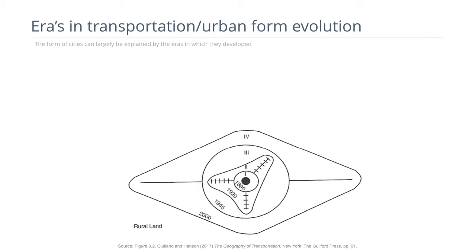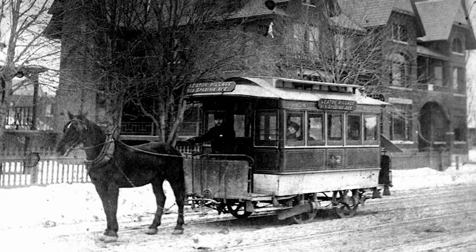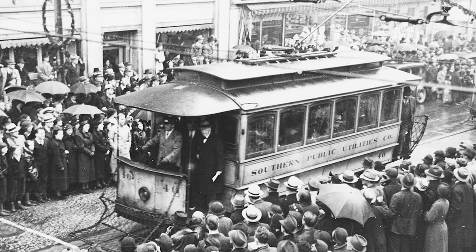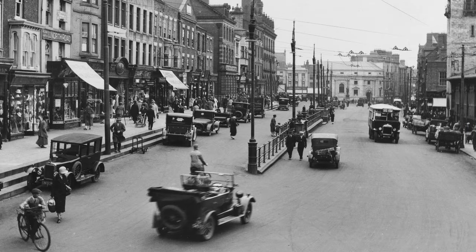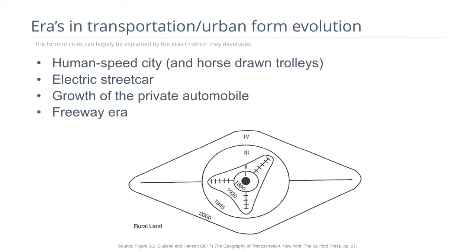Here we can see the four eras. The first — the small circle in the middle — is the human-speed city where people walked or used horse-drawn trolleys, and goods were moved with animals pulling carts. The city couldn't be very large because you simply couldn't travel far in a given time. The next stage is the electric streetcar city with spatial expansion along streetcar lines, then the growth of private automobiles filling in between streetcar lines, and finally the freeway era, which produced the most spatial expansion.